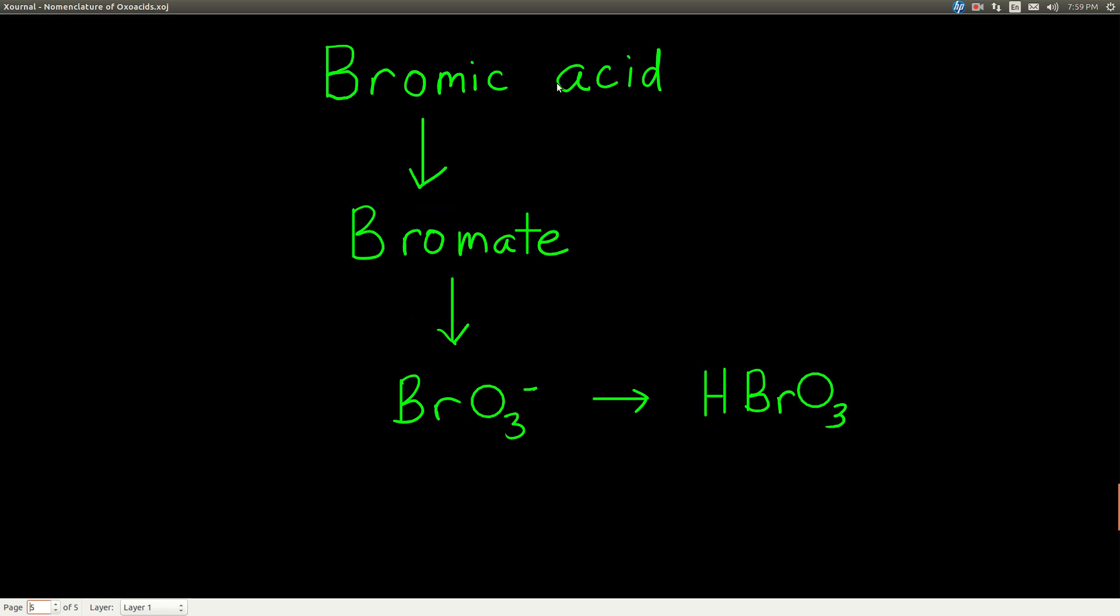Now, if we're going the other way, going from the name to the formula, we look at the word acid, so we know it's an acid. This ends in IC, so we change the IC back to ATE, and it becomes bromate. And again, this is where it's really useful to know your polyatomic ions. This is one of those 8 other polyatomic ions I showed you before. Bromate is the name for BrO3 with a negative 1 charge.